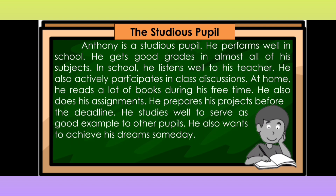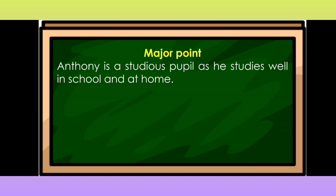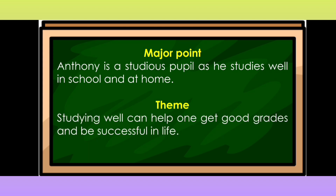He studies well to serve as a good example to other pupils. He also wants to achieve his dreams someday. The selection 'Studious Pupil' tells us that Anthony is a studious pupil as he studies well in school and at home. So that is the major point of the selection. Meanwhile, it also tells us that studying well can help one get good grades and be successful in life. So that is the theme of the selection.